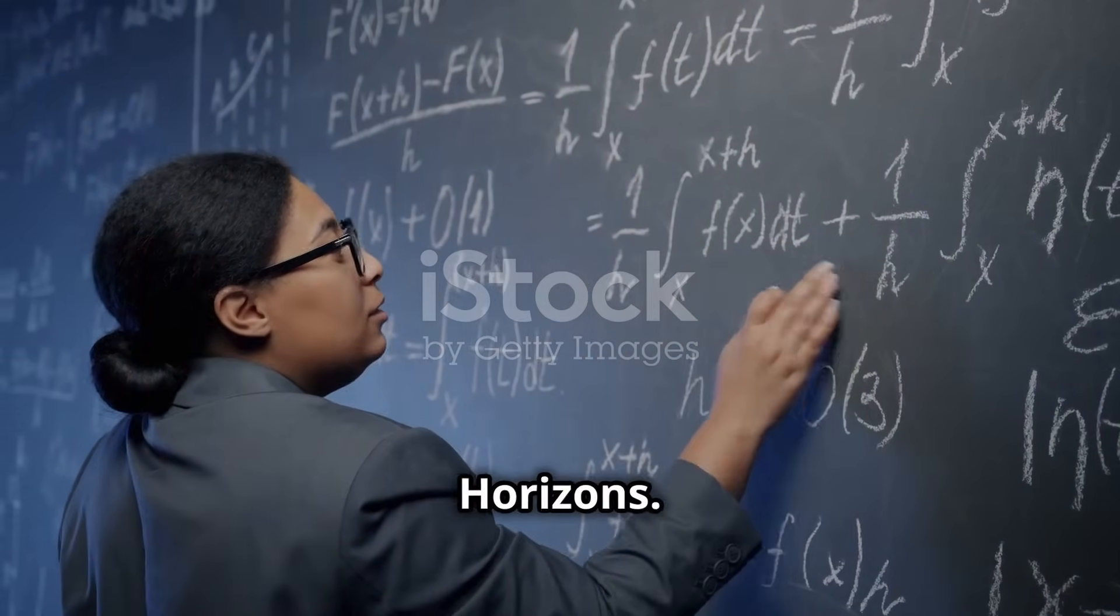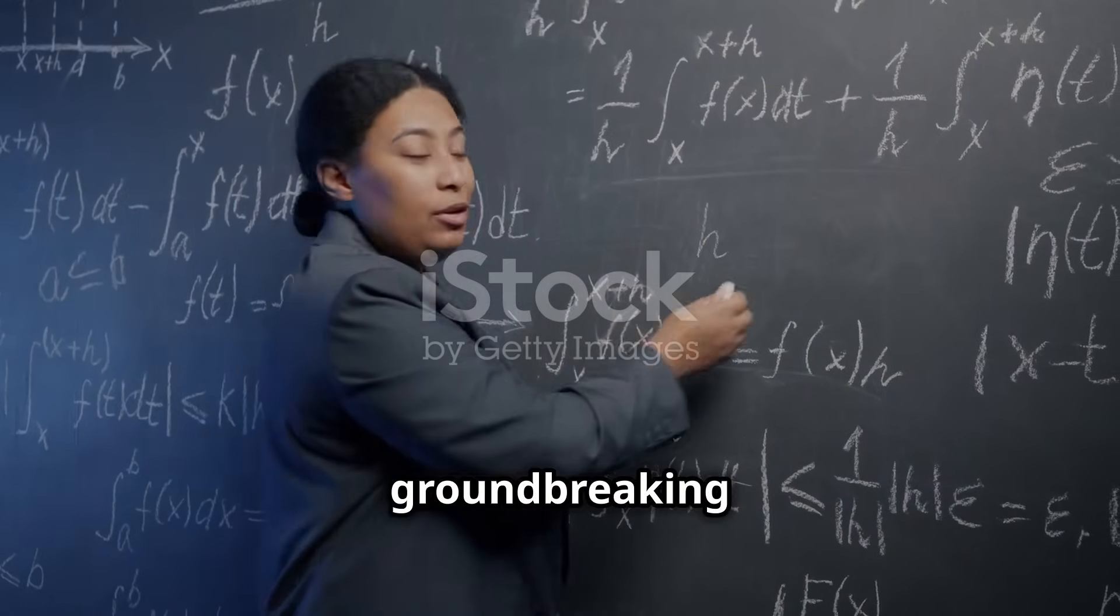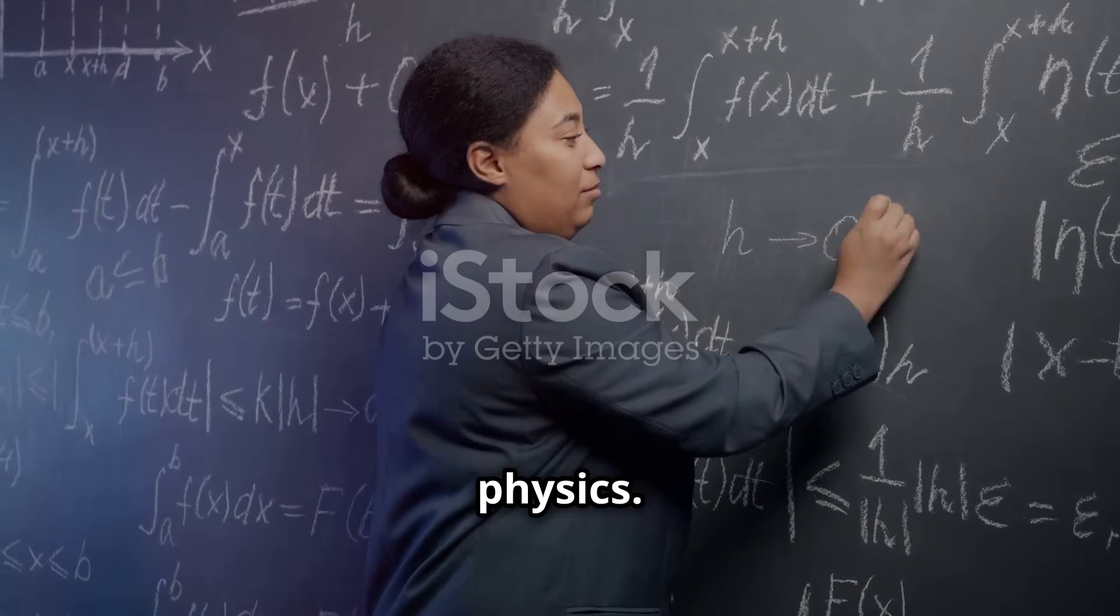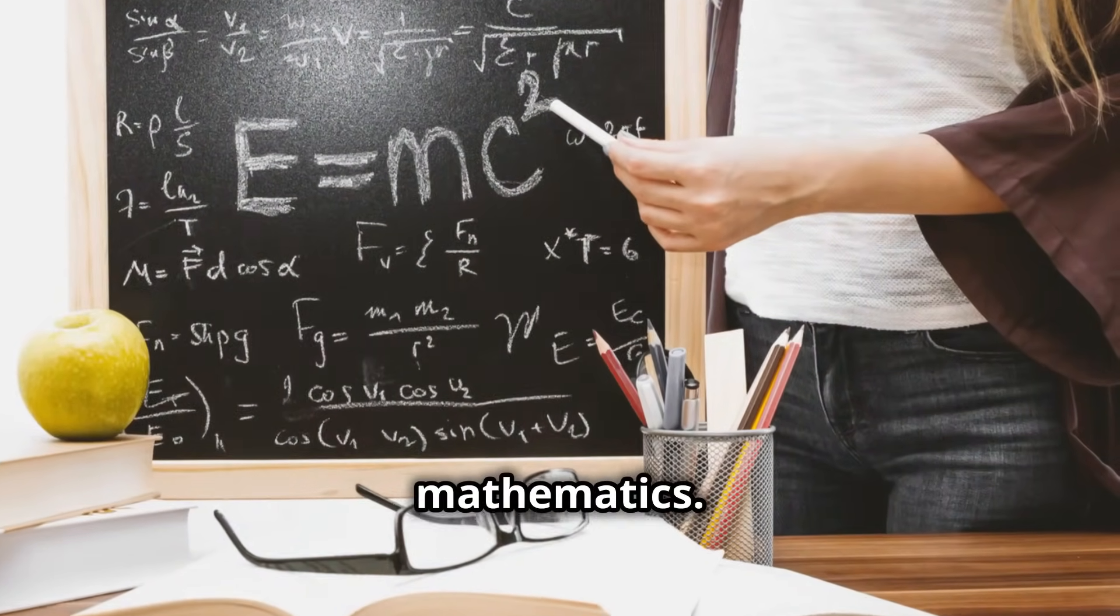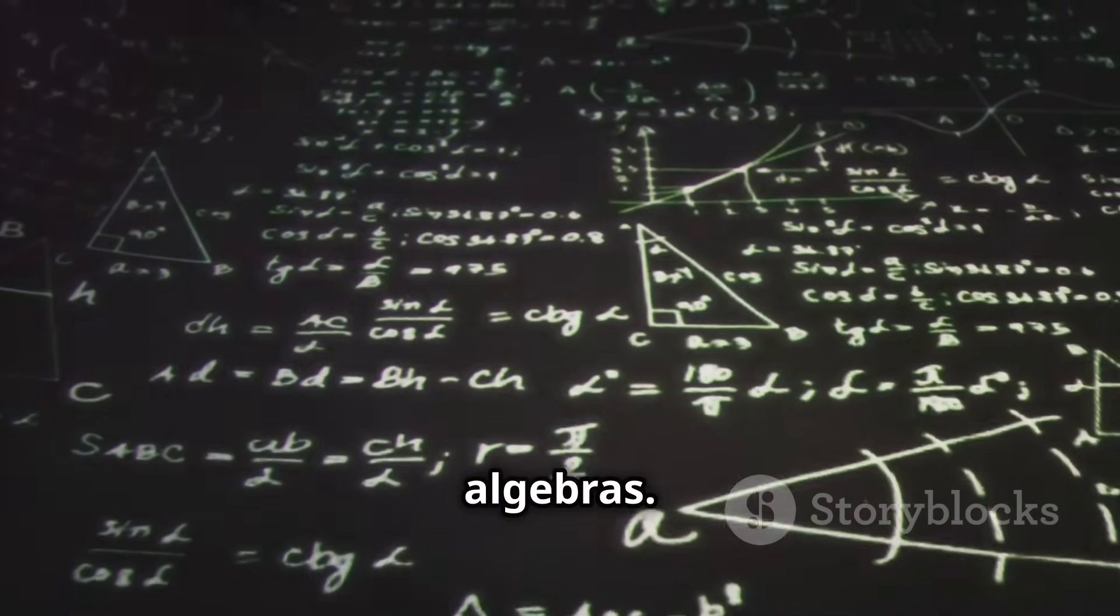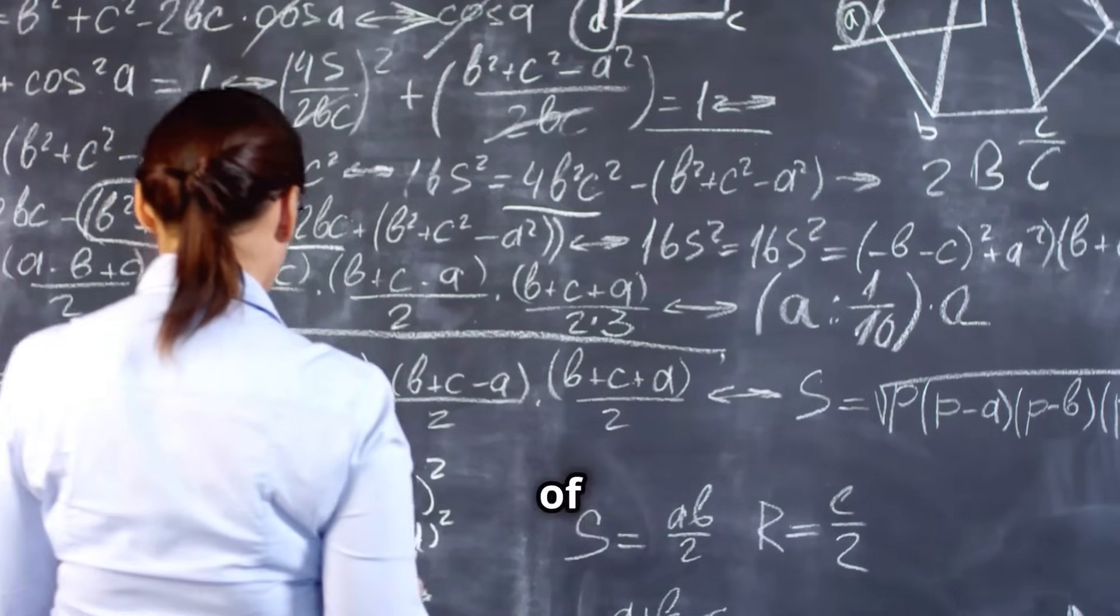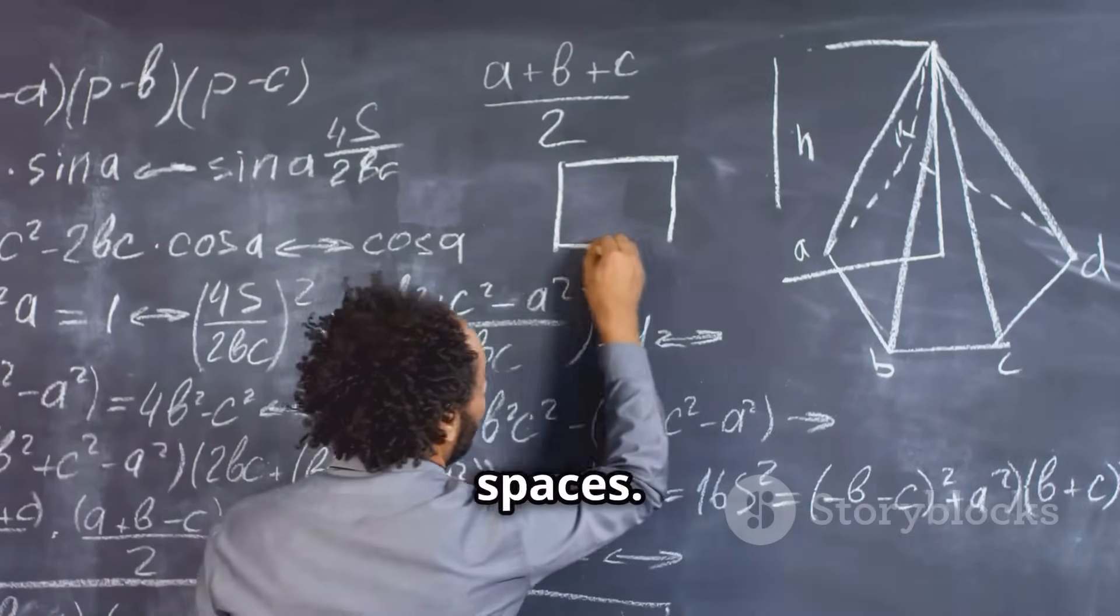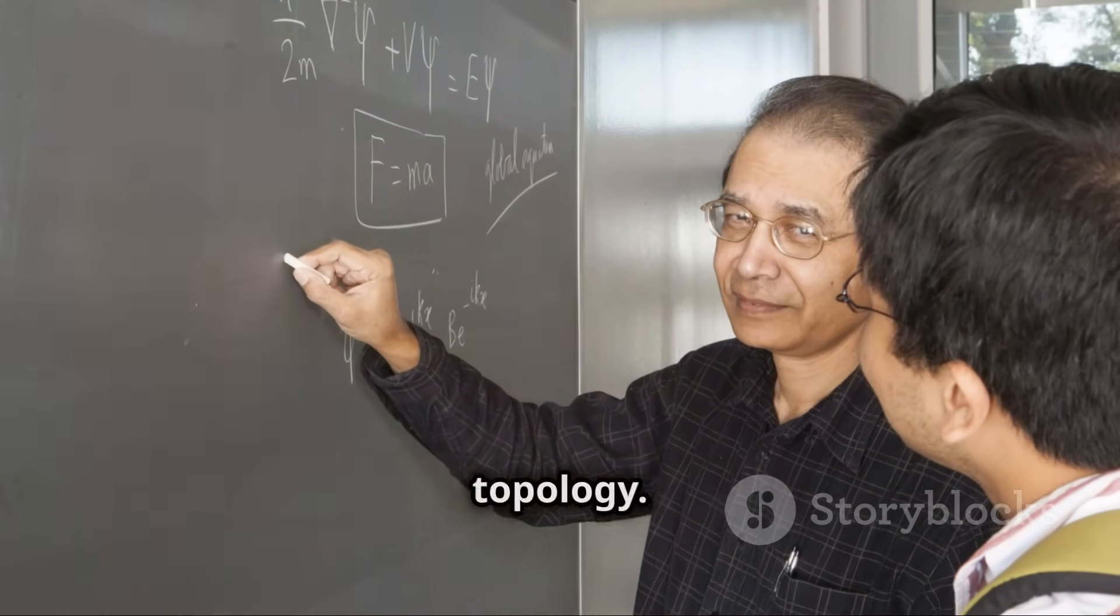Emmy Noether's genius extended far beyond her groundbreaking work in abstract algebra, invariant theory, and theoretical physics. She made significant contributions to other areas of mathematics, including algebraic topology and non-commutative algebras. Algebraic topology combines the tools of abstract algebra with the study of geometric shapes, providing powerful insights into the properties of spaces. Noether's work in this area helped lay the foundation for modern topology.